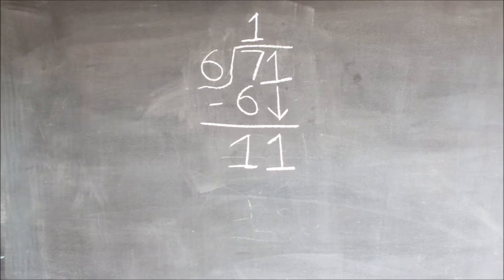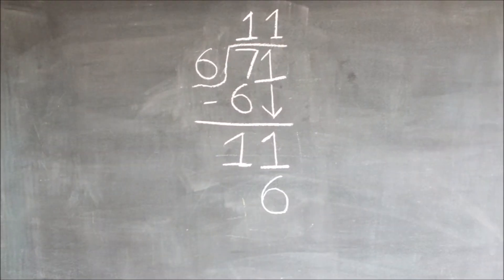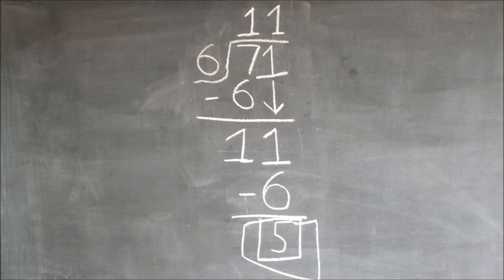We have brought down the one, and now we will continue the steps. Six goes into 11 only once. Six times one equals six, and then we write the six underneath the 11. Then we subtract the 11 with the six, which finally equals five.